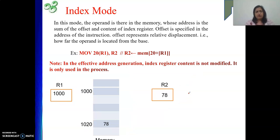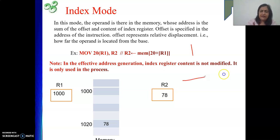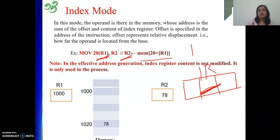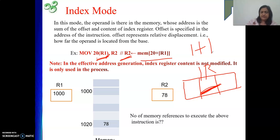Now we will find out how many memory references are required for this instruction. One is obvious — that is for fetching the instruction. Once you fetch the instruction, it is in IR, one part gives the offset, and register R1 is inside the CPU. So both are added by the ALU, one address is produced, that address is loaded in MAR, a memory cycle is initiated, data comes in MDR, and that data is moved to register R2. During that whole process, memory is referenced one more time. So as a whole, two memory references are required.